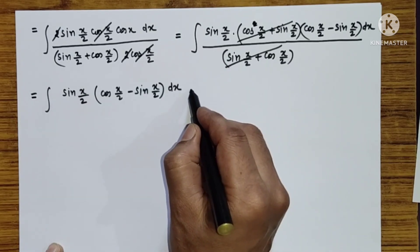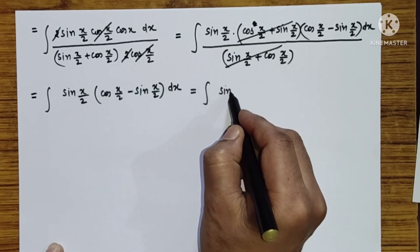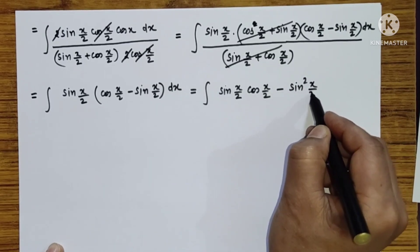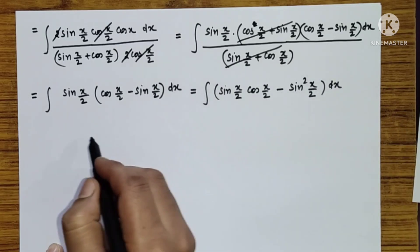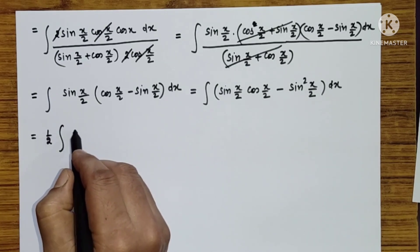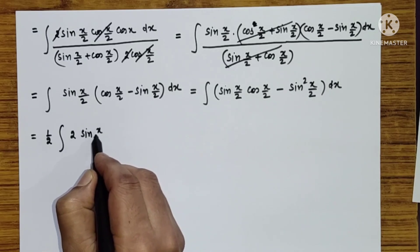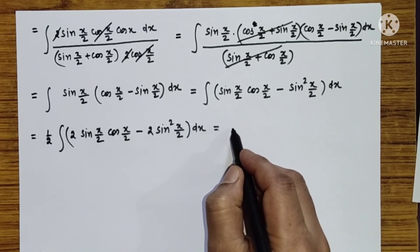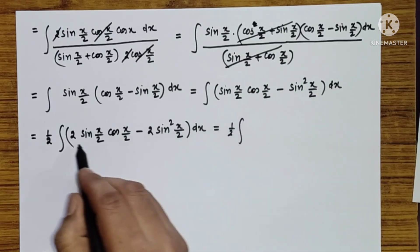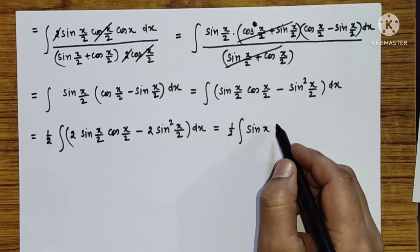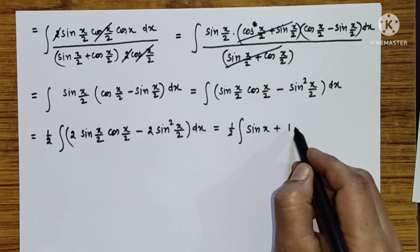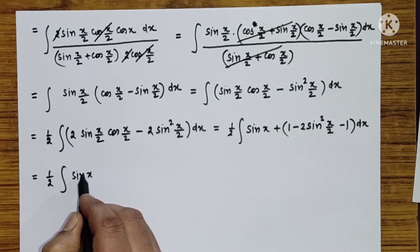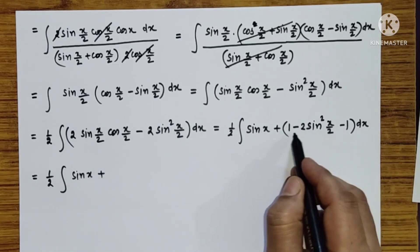Multiplying inside gives sin(x/2)cos(x/2) minus sin²(x/2) dx. Taking half out, we can rewrite this as 2sin(x/2)cos(x/2) minus 2sin²(x/2), which equals half the integral. Adding and subtracting 1: 2sin(x/2)cos(x/2) is sin x, and 1 minus 2sin²(x/2) equals cos x, so this becomes half the integral of (sin x plus cos x minus 1) dx.